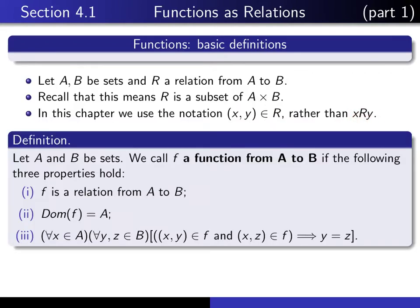Now if we let A and B be sets, then we say that f is a function from A to B if the following three properties hold. First of all, it should be a relation from A to B.